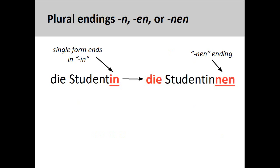All feminine nouns ending in -in, such as Studentin, a woman student, will have the plural ending -nen, Studentinnen.